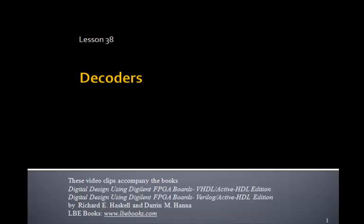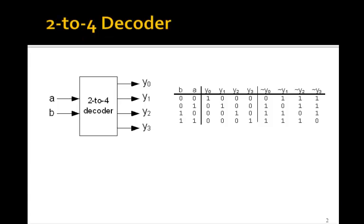This is lesson 38 on decoders. This is an example of a 2 to 4 decoder. There are two inputs, A and B, and four outputs, Y0 to Y3.